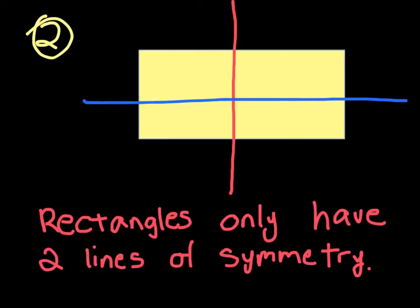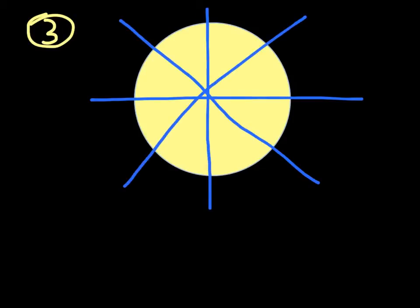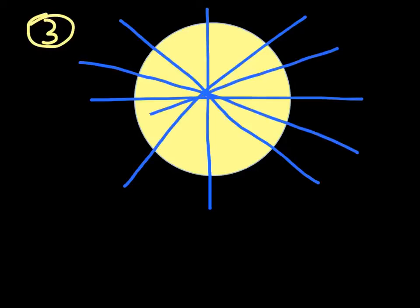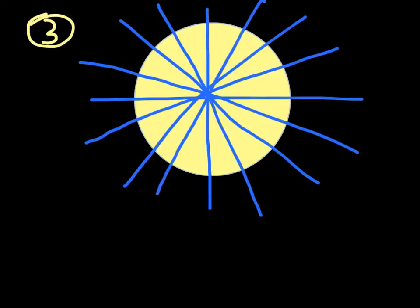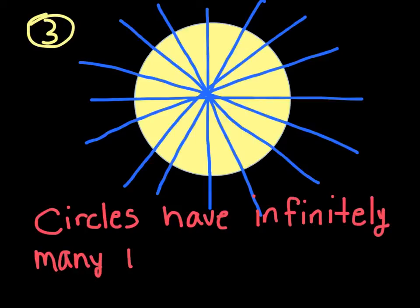Our third shape is going to be a circle. A circle is a bit unique because it has infinitely many lines of symmetry — that means we can't count the number of lines of symmetry. I can keep drawing lines, but a circle has infinitely many lines of symmetry. So circles have infinitely many lines of symmetry.